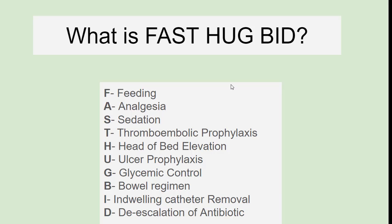What is FAST HUGBID? It is a mnemonic used to identify drug-related problems in ICU. F stands for feeding. A stands for analgesia. S stands for sedation. T stands for thromboembolic prophylaxis. H stands for head of bed elevation. U stands for ulcer prophylaxis. G stands for glycemic control. B stands for bowel regimen. I stands for indwelling catheter removal. D stands for de-escalation of antibiotics.